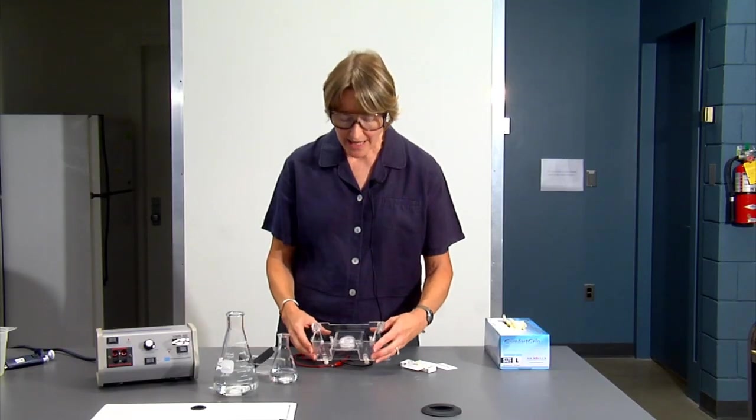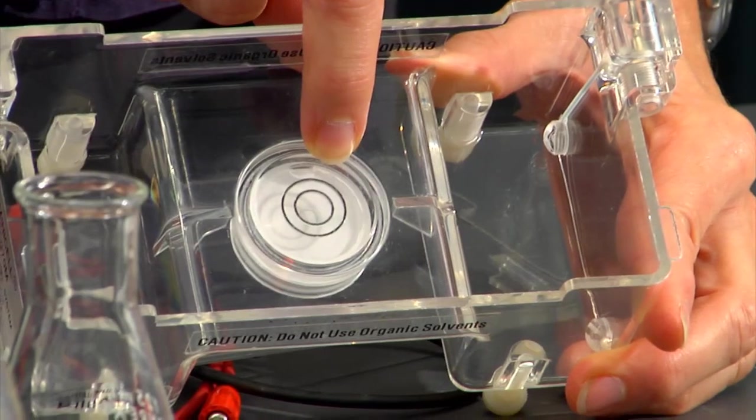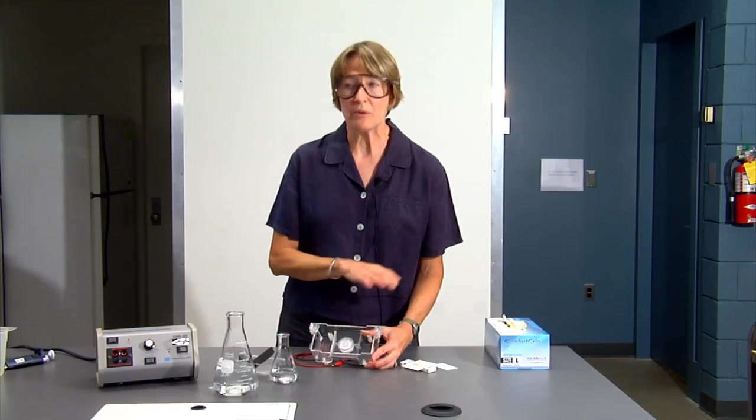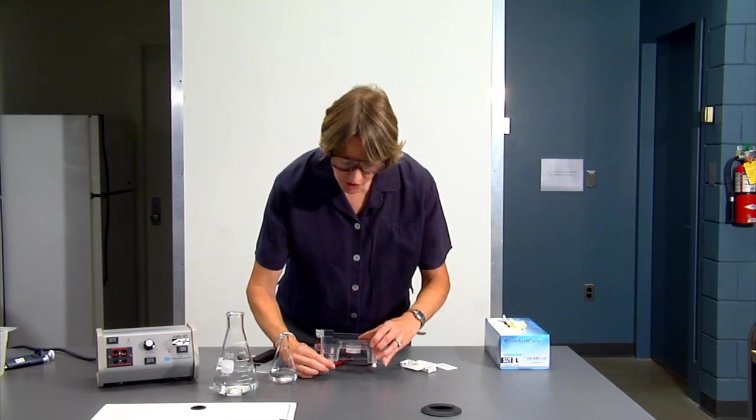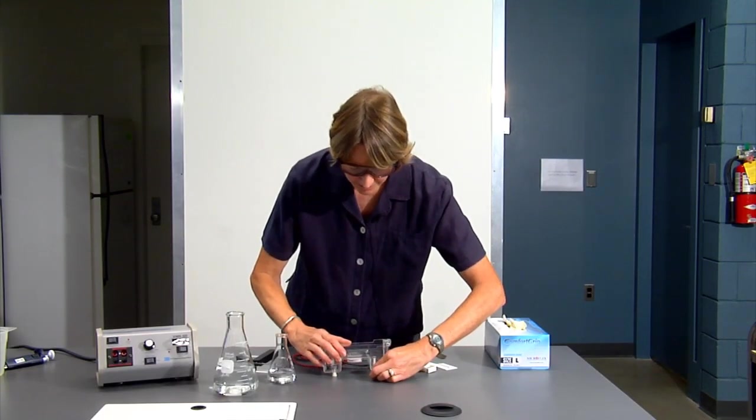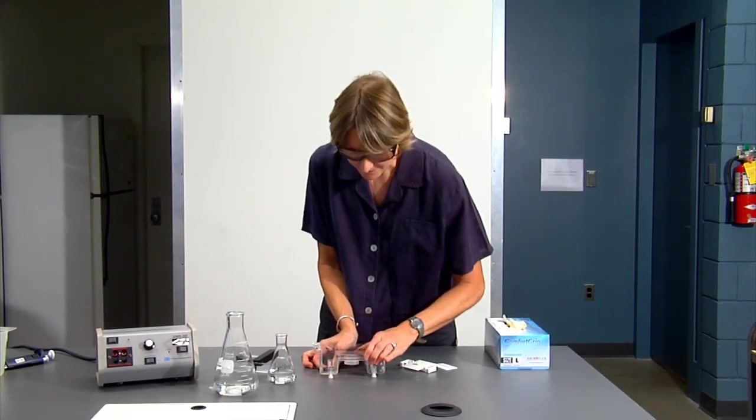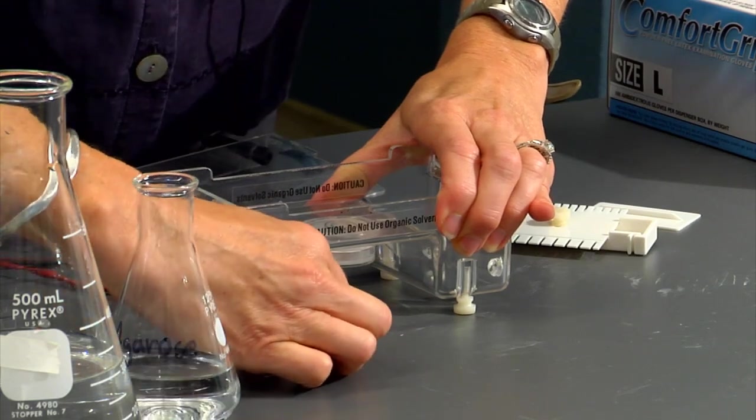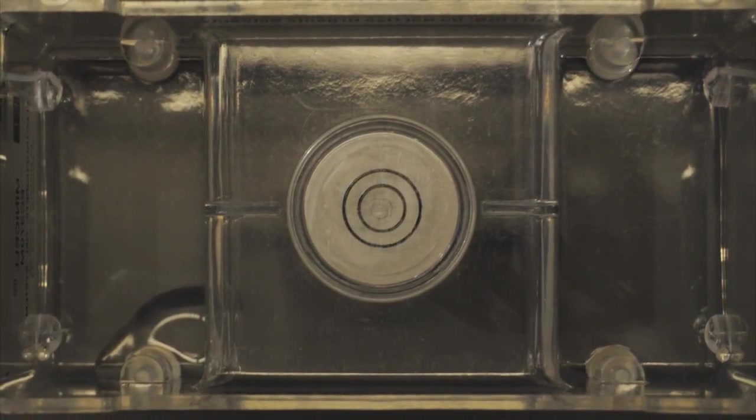This is our gel box, and if you notice, there is a leveler in the center of the box. The first thing we need to do is level our gel box so that when we pour the gel, the gel will have a flat surface. You'll need to adjust the screws in the legs of the gel box until the bubble is in the center of the circle of the leveler. Once you've finished adjusting the gel box and the bubble is in the center of the leveler, you're ready to pour your gel.